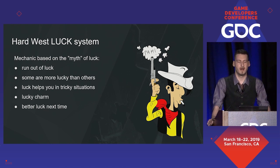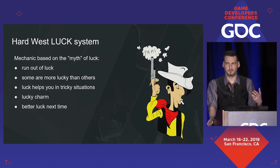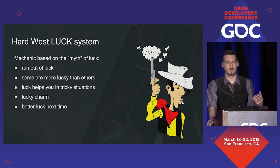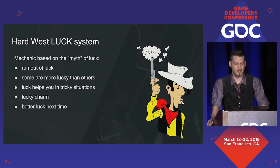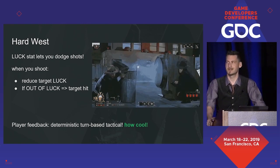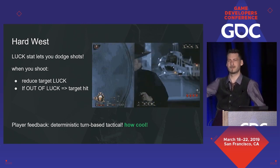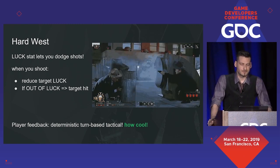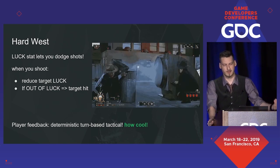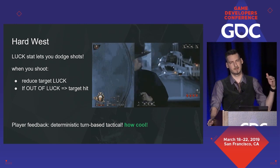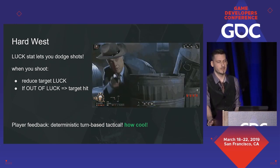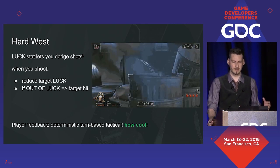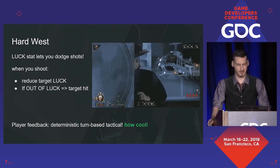I wanted to make luck an important pillar of Hard West because it works with the theme — luck is very Wild West-y. And you can use the common understanding of an abstract concept and make it into a game mechanic. In the Hard West luck system, characters have luck which helps them dodge shots. When you shoot, the target's luck is reduced by the amount equal to your accuracy, and when the target's luck is depleted, you hit them. The reception was in general very good. It catered to XCOM players who didn't like random number generation, it gives compelling predictability, it's fresh, and it sets Hard West apart from XCOM — exactly what we wanted.